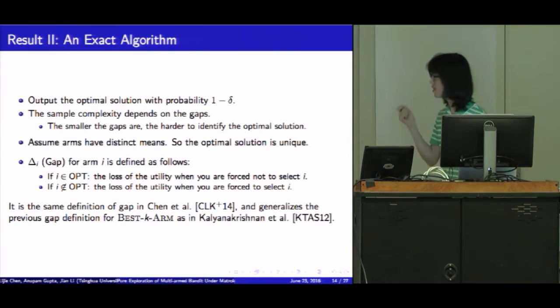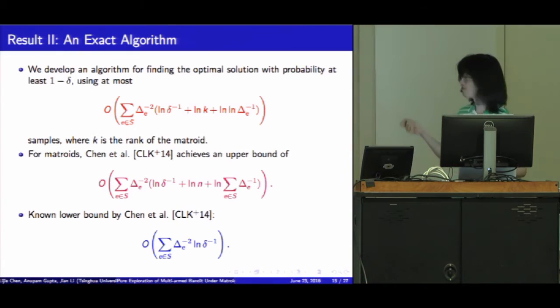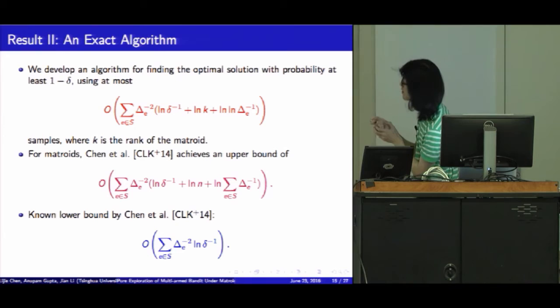The gap for arm i is defined as follows. If i belongs to the optimal solution, it's the loss of utility when you are forced not to select i. And if i is not in the optimal solution, it's the loss of utility when you are forced to select i. That is switching the status of i and the loss you will pay for it. It's the same definition of gap in Chen et al.'s work and generalizes the previous definition for best k-arms. We developed an algorithm for finding the optimal solution with probability at least 1-minus-delta using this amount of samples, where k is the rank of the matroid.